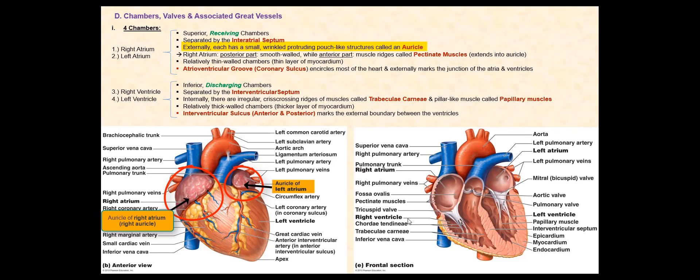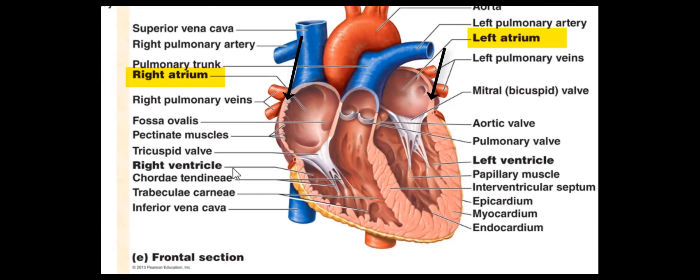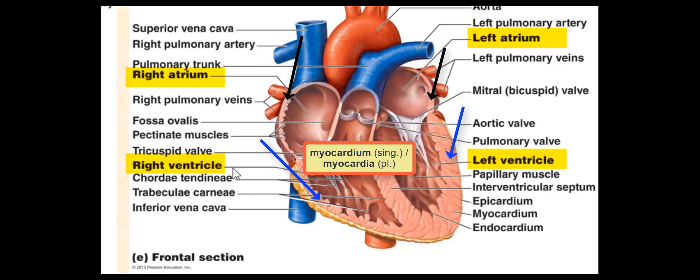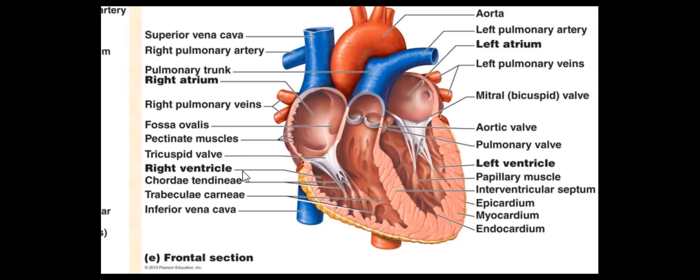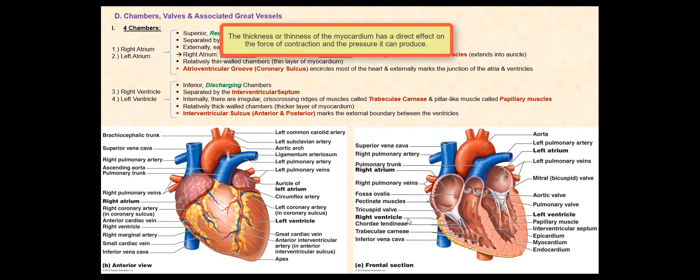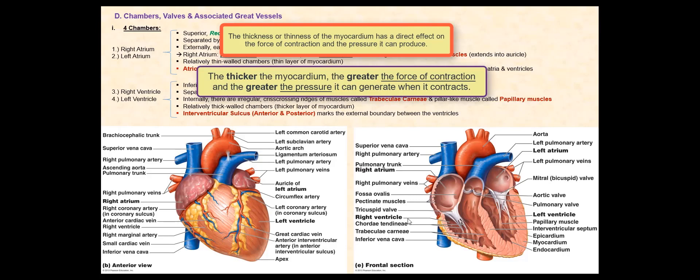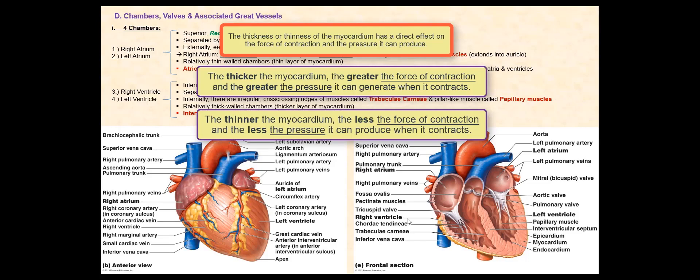Basically, slightly increasing the volume of blood that each atrium receives from the veins. The atria have all three layers that make up the wall of the heart: the epicardium, the myocardium, and the endocardium. The myocardia of both atria have roughly the same thickness. However, when compared to the ventricles, the ventricles have a significantly thicker myocardia. It is important to note that the thickness or thinness of the myocardium has a direct effect on the force of contraction and the pressure it can produce. The thicker the myocardium, the greater the force of contraction and the greater the pressure generated when it contracts. While the thinner the myocardium, the less the force of contraction and the less the pressure it can produce.